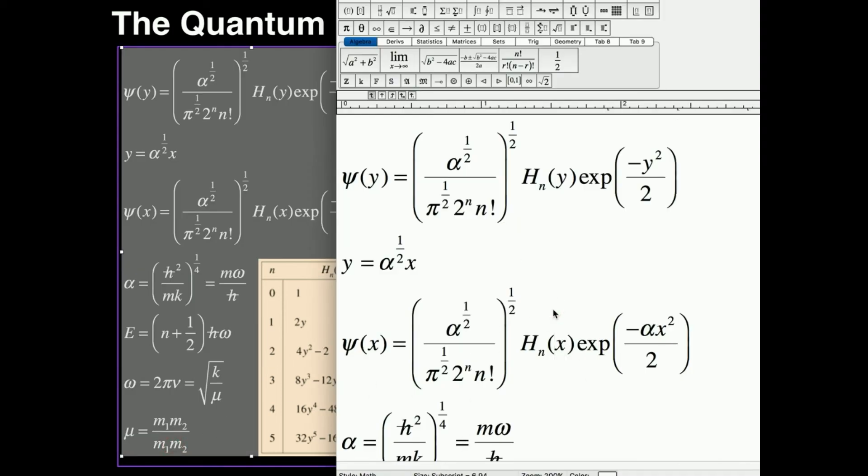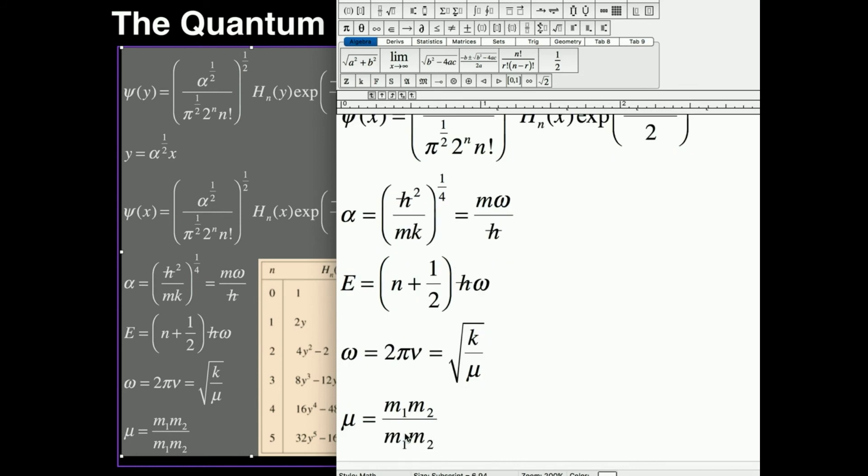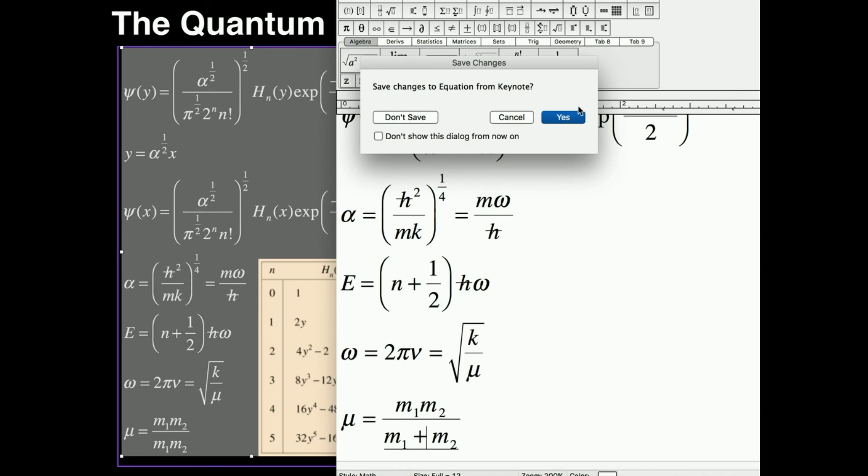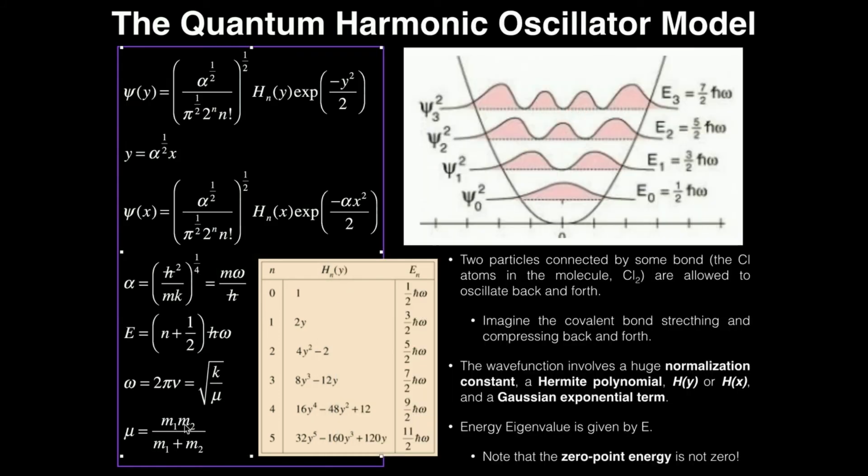And the reason we have to use what's called a reduced mass is because we actually have two different particles here. We actually have two atoms separated by a bond. So reduced mass is a substitute for mass that you use when you have two particles that are oscillating back and forth towards each other and away from each other. And you just find the corresponding masses of the first particle, mass of the first atom times mass of the second atom divided by their sum. And you take that reduced mass and just plug it in here.